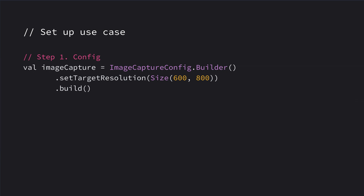The use cases are straightforward to set up. There are three steps: configuration, binding, and interaction. Let's take image capture as an example. Suppose you want the app to take pictures — the first step is to create an image capture object with the config, where you can specify parameters like the resolution of the picture. There's a challenge here: users love Android for its device diversity, but parameters that work on one device may not work on another. In this case, CameraX will handle this diversity for you. If the device doesn't support the resolution you set, it will simply fall back to the second best thing, so the configuration will always be successful.